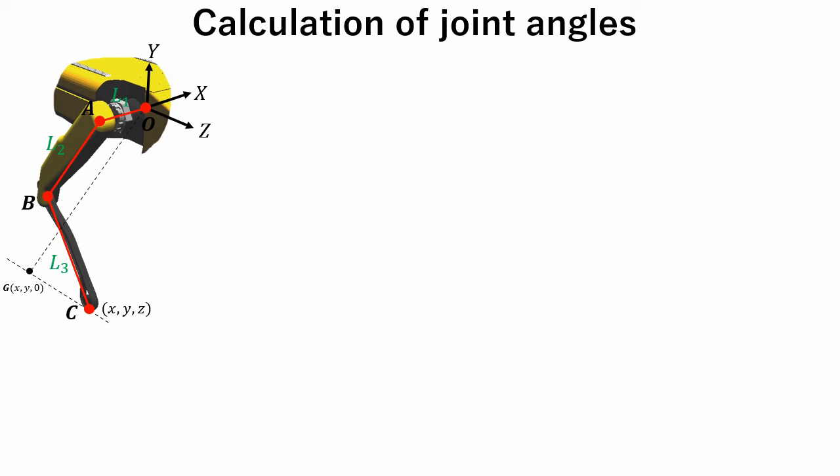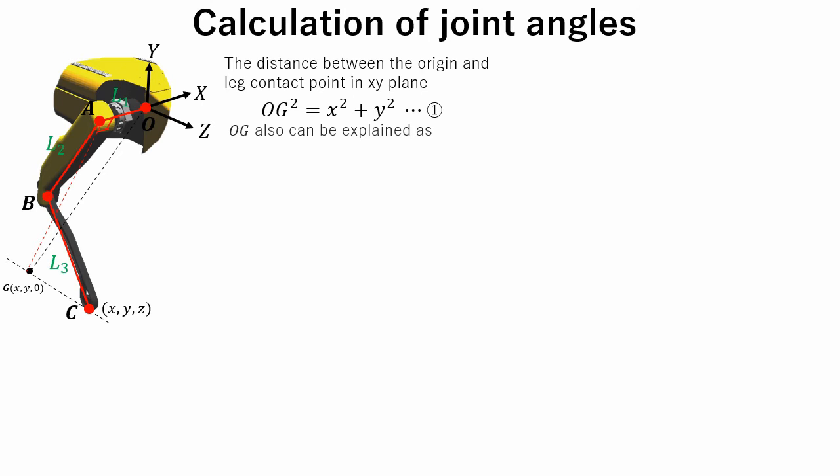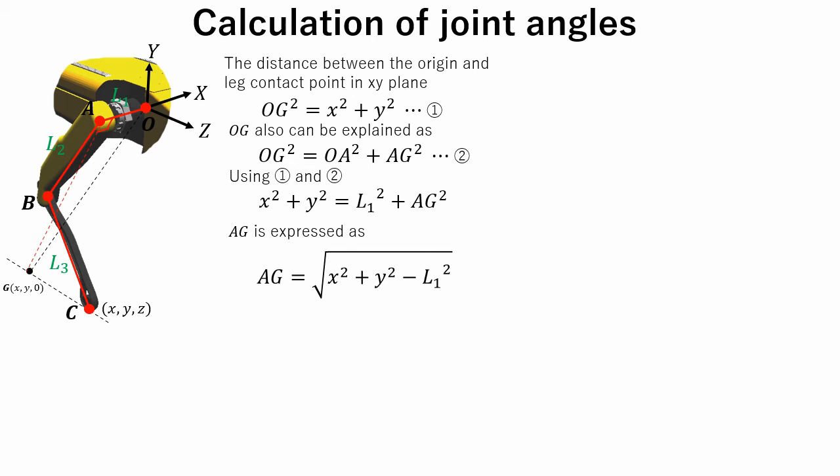O-G is the distance between the origin and leg contact point in the XY plane. O-G can be found with the next formula. O-A and A-G are vertical to each other. So, O-G also can be explained as this formula. Using formula 1 and 2, the following equation is derived. A-G is expressed as shown. For the later calculations we also have to find length of A-C. Since A-G and G-C are vertical to each other, A-C is expressed like this.